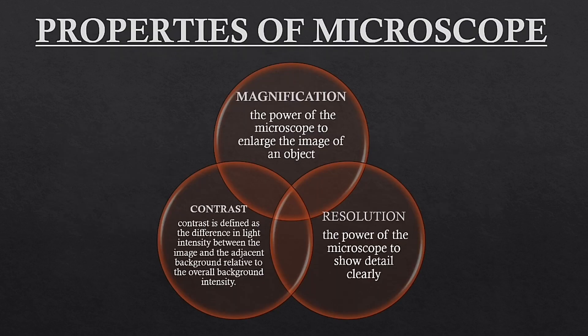A microscope has three key properties: magnification, contrast, and resolution. Magnification is the power of the microscope to enlarge the image of an object — that is, the power to enlarge the image of any object.